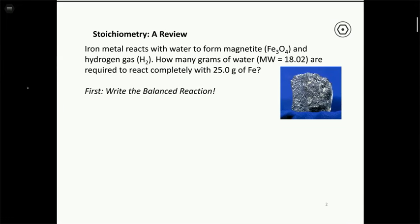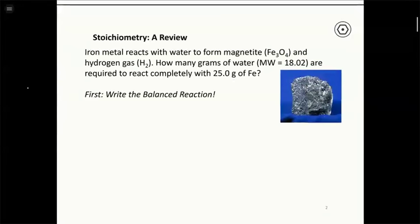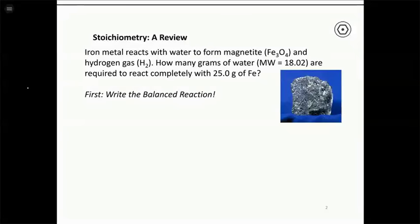So we have this problem: iron metal reacts with water to form magnetite and hydrogen gas. How many grams of water are required to react completely with 25.0 grams of iron? Whenever you're given a stoichiometry problem, the first thing you should always do is write a balanced chemical reaction. We can't begin the calculations without a balanced reaction — there's no shortcut around that.